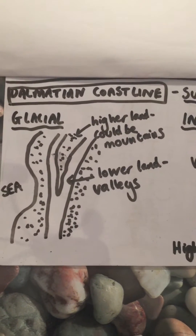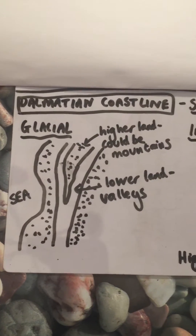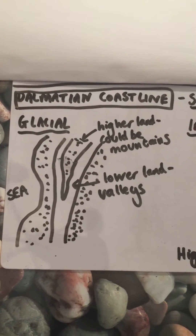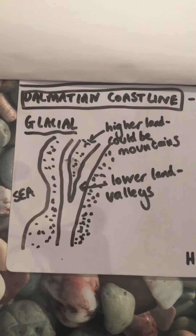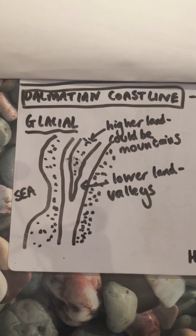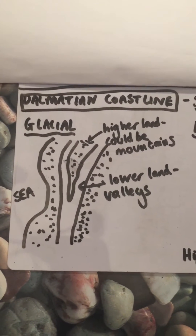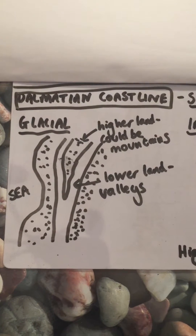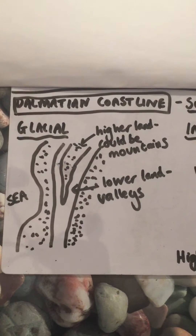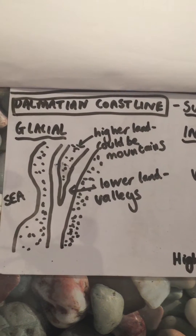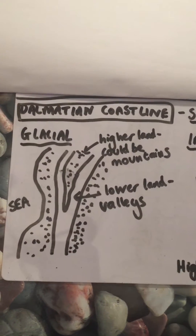This is the last submergent feature and it's called a Dalmatian coastline. Think of a Dalmatian dog - its characteristic is that it has spots. That's exactly what happens here: the spots you get on a Dalmatian coastline are islands.